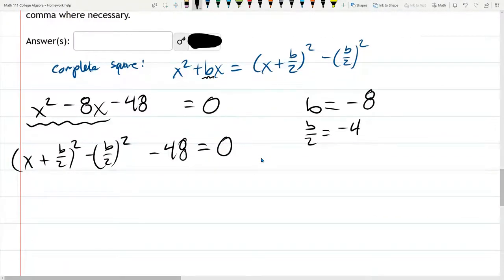Subbing in b over 2, which is negative 4. We have x minus 4 squared minus negative 4 is in the parentheses.